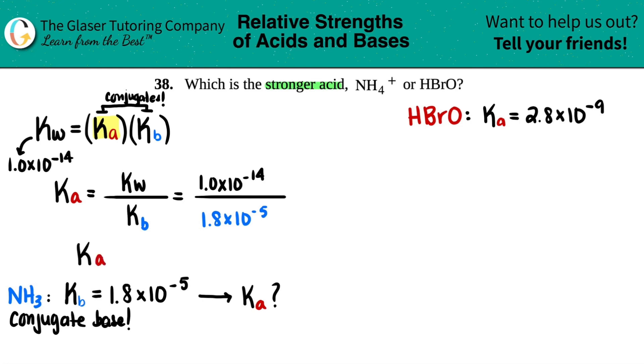So let's see what it is. Calc is out. 1 times 10 to the negative 14th divided by 1.8 times 10 to the negative 5th. And I get, we'll do two sig figs. So 5.6. 5.6 times 10 to the negative 10th.